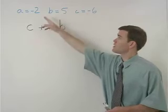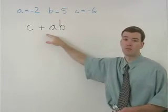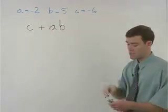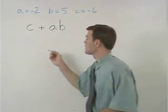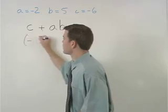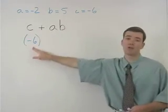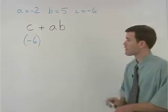So the first thing we want to do is substitute these numbers into our problem. Since C equals negative 6, we're going to replace this C with a negative 6. And as we do that, we're going to put that negative 6 in parentheses.